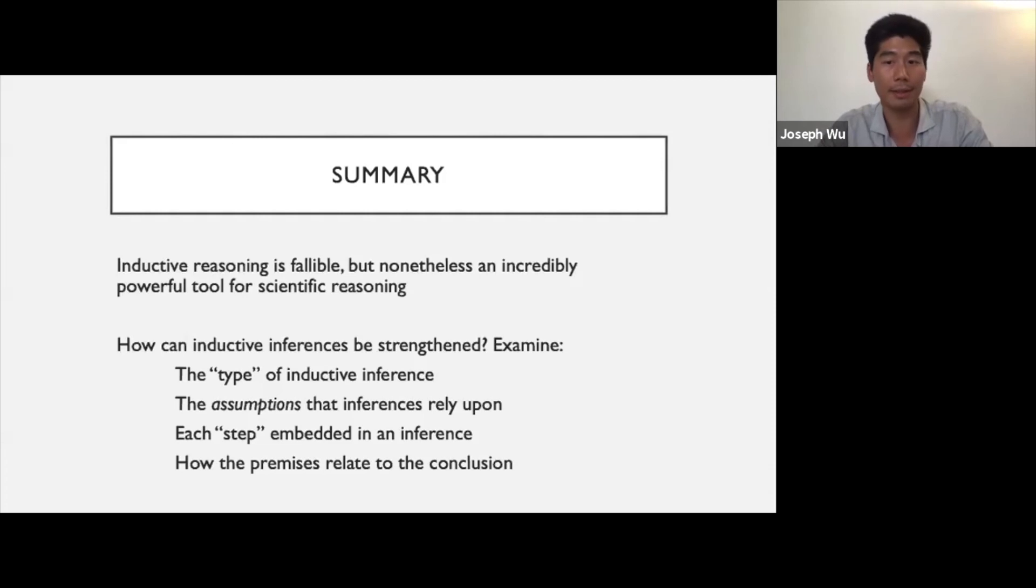How can inductive inferences be strengthened? First, we can examine the type of inductive inference. Are we moving from a sample to draw a conclusion about the general population? Are we making an inference about an individual based on population level knowledge? Second, we can assess the assumptions required for inferences to be sound. Recall how in our example of voter polling, we needed to ensure that the voter sample was representative and that it was large enough. Third, we can assess each individual step embedded in an inference. When moving from scientific evidence to individual predictions, there are often many distinct inferences involved. Finally, we can be mindful of how the premises relate to the conclusion. Does each premise actually provide evidence to increase your confidence in the conclusion? I hope this tutorial has been helpful. Thanks for watching.